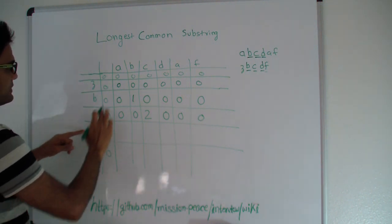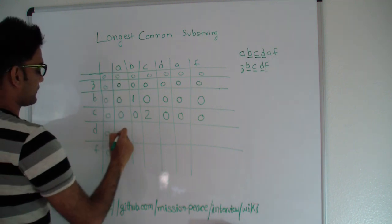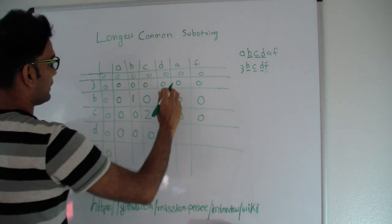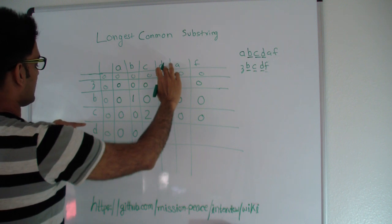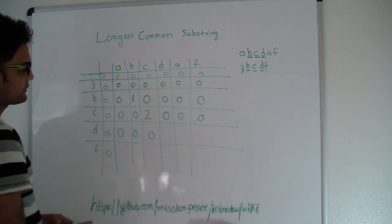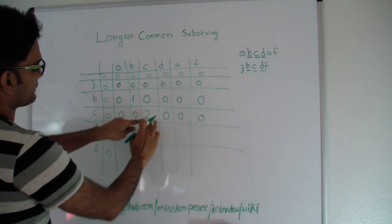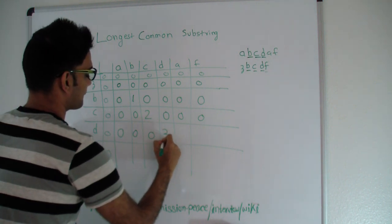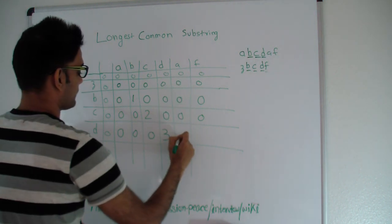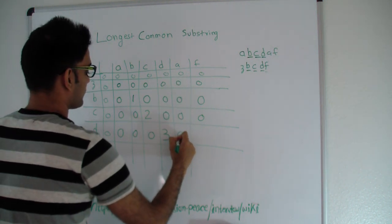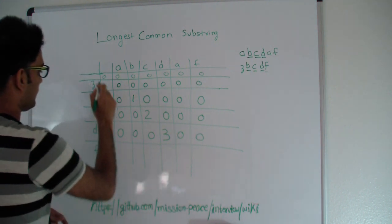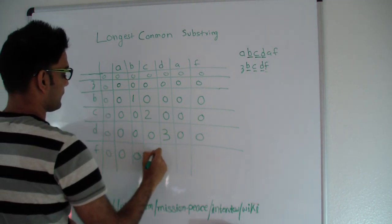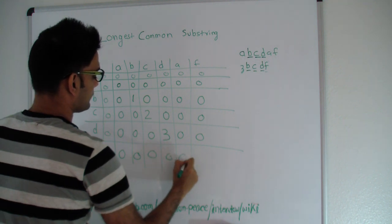Let's move on to this row. D and A are different so 0. 0, 0. Now here D and D are the same, so the longest common substring will be what is diagonally across plus 1, so 3. A and D are different so 0 and 0. Let's fill up the last row: 0, 0, 0, 0, 0, 0.